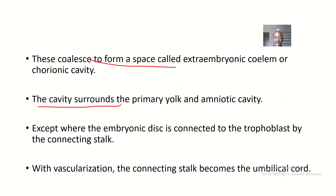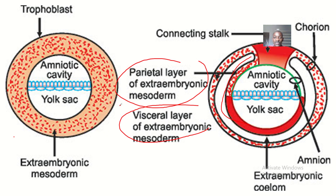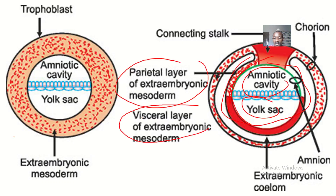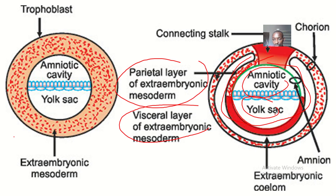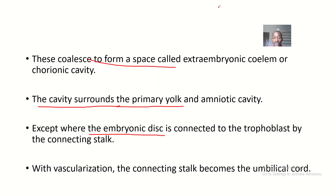This cavity will surround the yolk sac and the amniotic cavity. Remember, we spoke about the chorionic cavity being like a bigger balloon having two smaller balloons inside it. So this whole larger surface here is the chorionic cavity, or chorionic sac, and it contains the amniotic cavity and the yolk sac inside — surrounding the primary yolk sac and amniotic cavity, except where the embryonic disc is connected to the trophoblast by the connecting stalk.